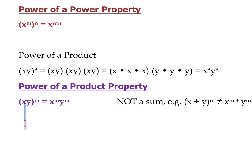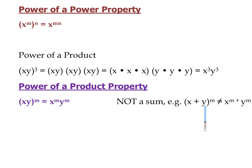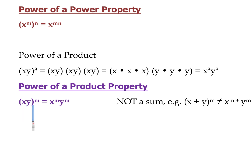So x times y to the m gives us x to the m power times y to the m power. Note this is a product, not a sum — this does not work for a sum. This is one of the more common mistakes with powers. If you have x plus y to the m, that is not equal to x to the m plus y to the m. These are not equal. When we have a product all raised to the same power, each of those factors can be raised to that power.